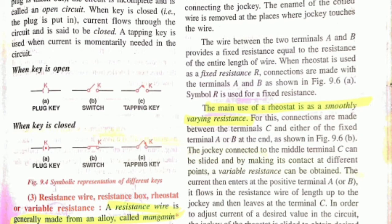And a rheostat is a device which adjusts the magnitude of current by changing the length of resistive wire. Because resistance depends upon the length and the thickness of the wire.